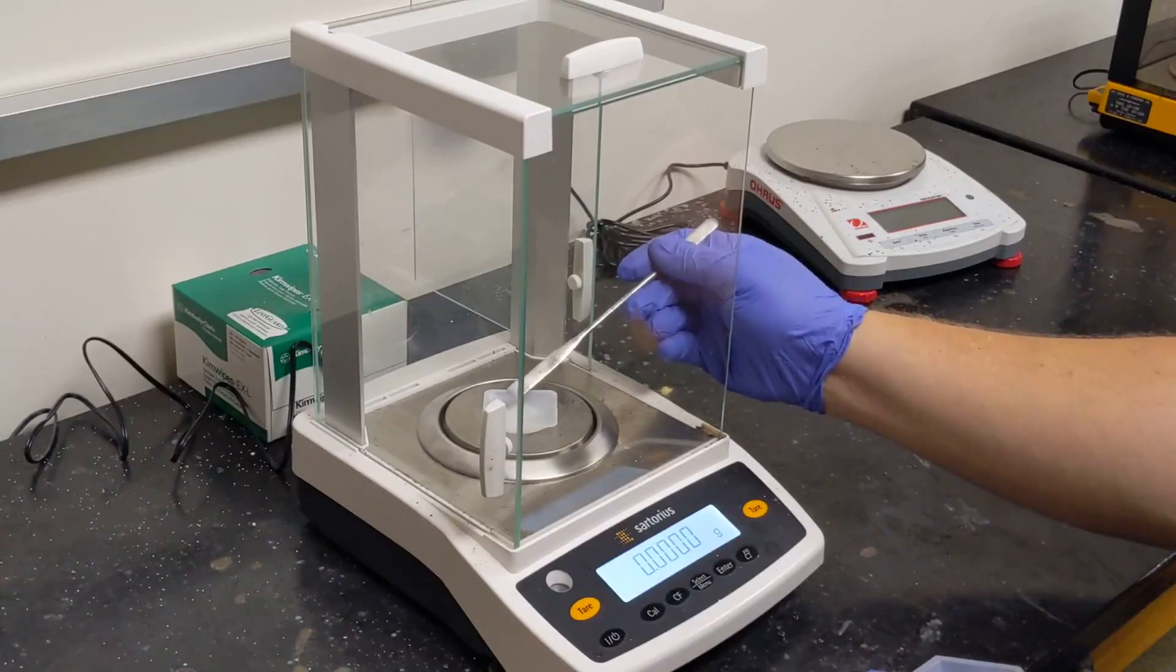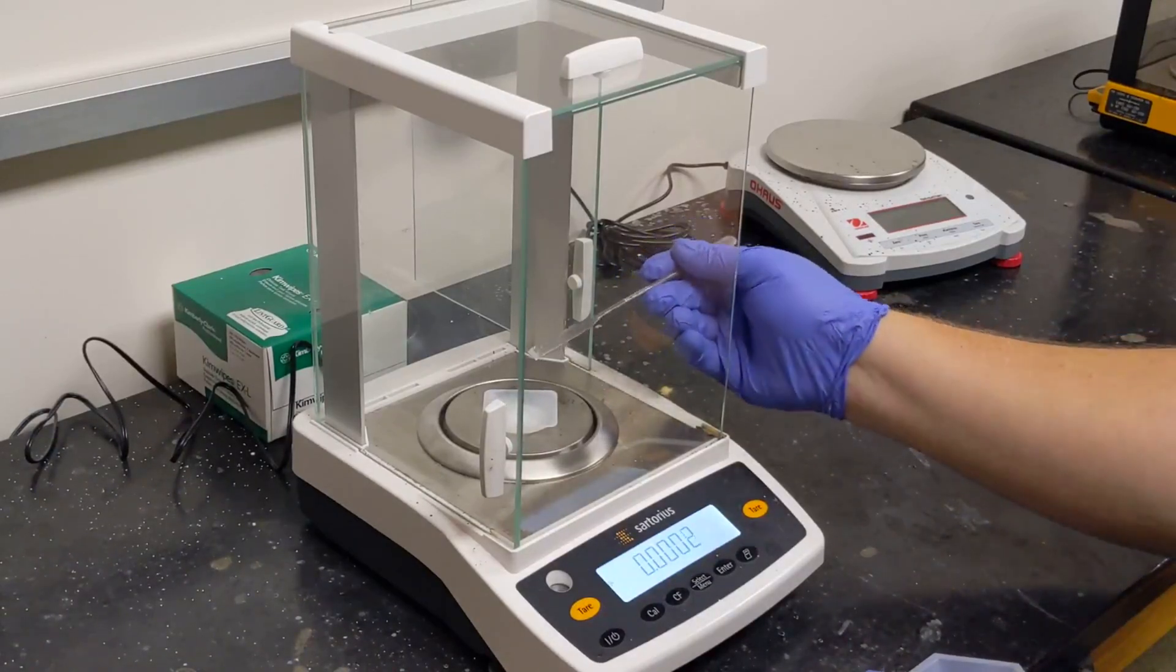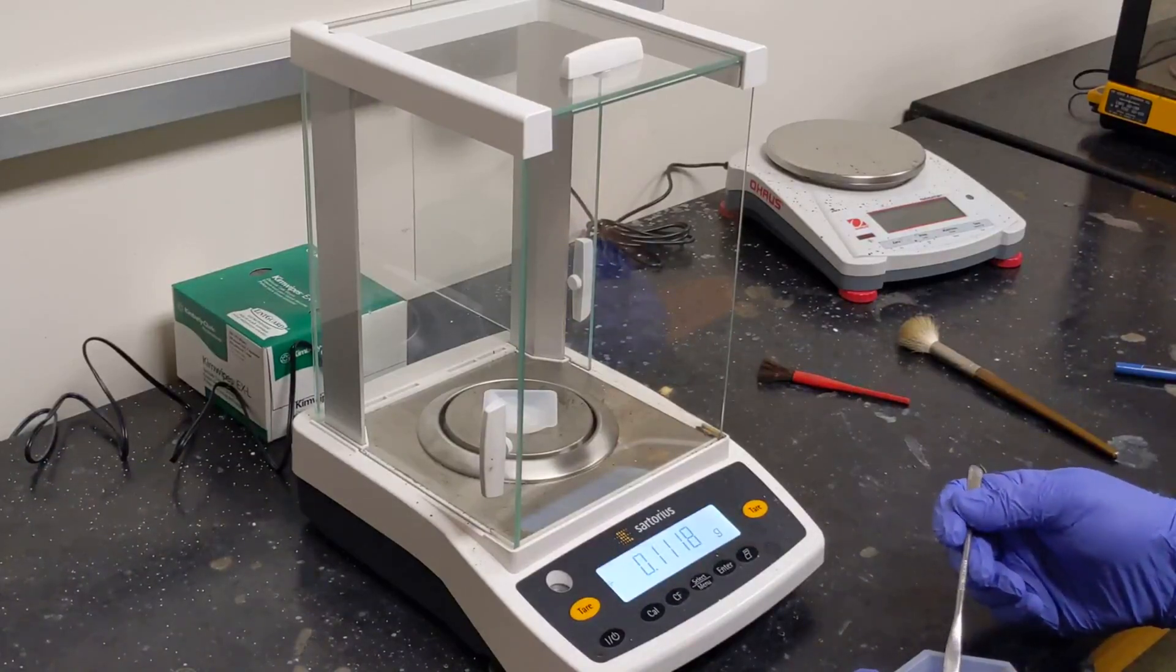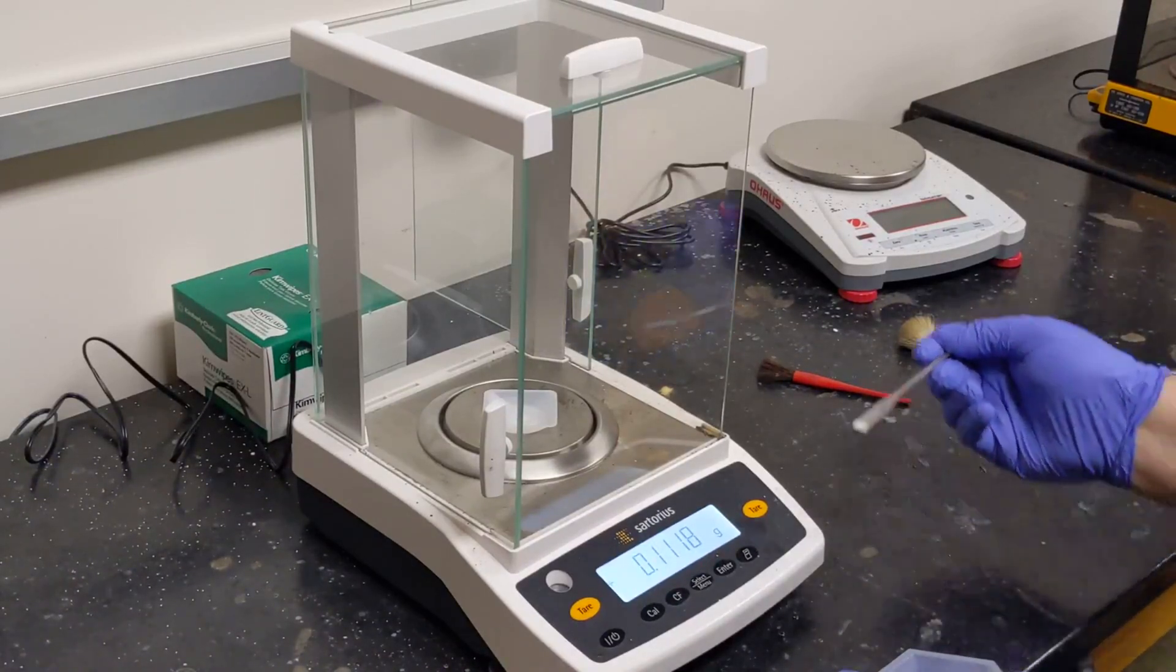You may have to tap the spatula in order to get it off the end. That's perfectly fine. We'll repeat this process until we have the amount of material on the weighboat that we need for our particular procedure.